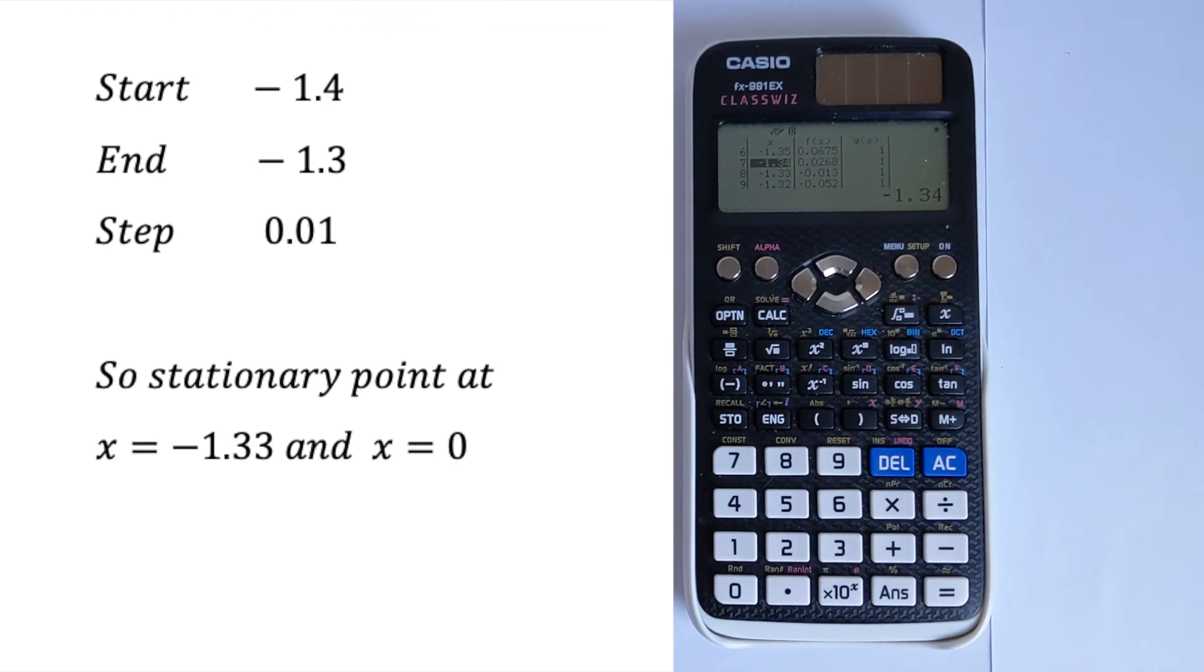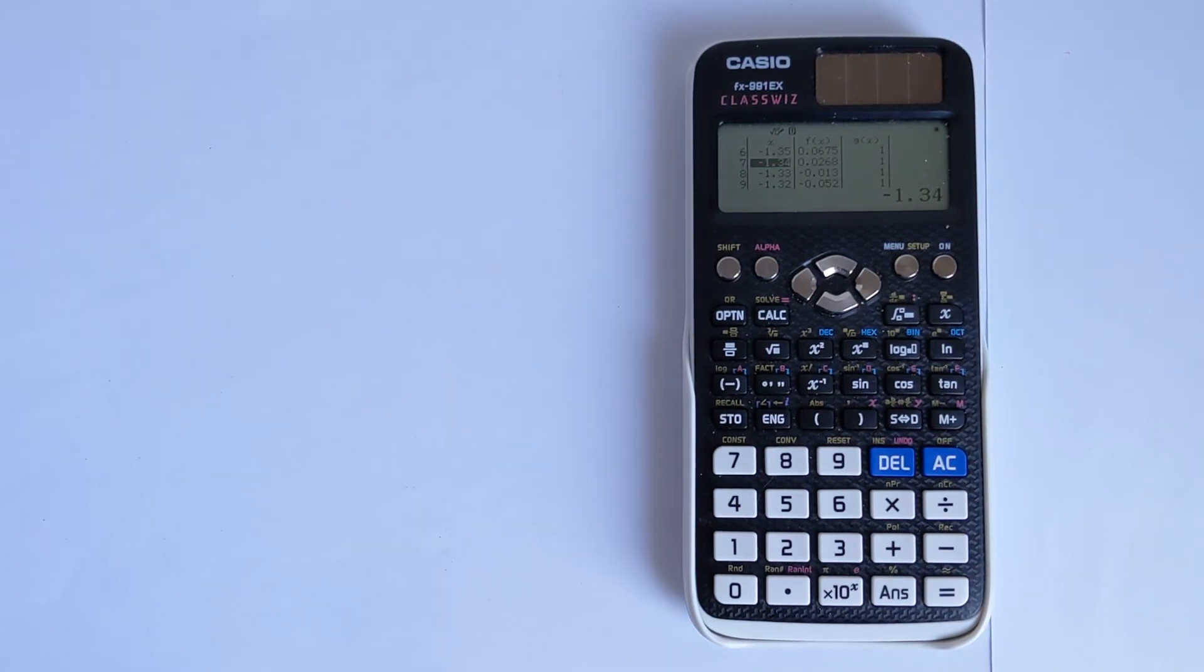And it's somewhat closer to -1.33. So the other stationary point is going to be -1.33. And the first one is x equals 0. So that's your two stationary points. And that's how you can find it iteratively to two decimal places. So I hope this was helpful to you. If it was, please like and subscribe below. And finally, thank you very much for watching.